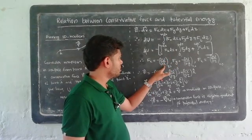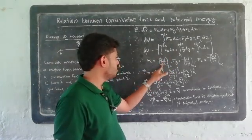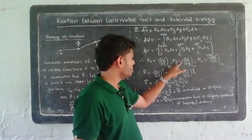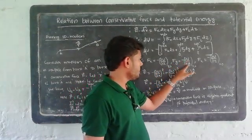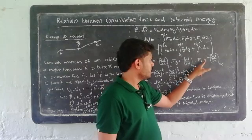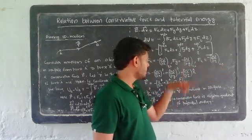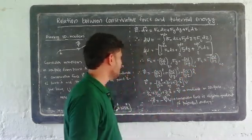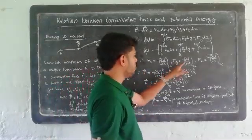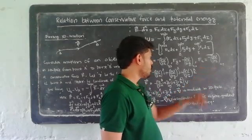Using partial differentiation, since U is a function of x, y, and z: Fx equals minus partial U by partial x (with y and z constant); Fy equals minus partial U by partial y (with x and z constant); Fz equals minus partial U by partial z (with x and y constant). So Fx equals minus ∂U/∂x, Fy equals minus ∂U/∂y, and Fz equals minus ∂U/∂z.